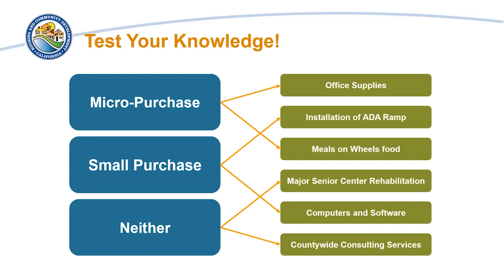Here are the answers. The purchase of office supplies can be procured using the micropurchase method so long as the supplies do not exceed $10,000 in the aggregate. The same is true for food for a Meals on Wheels program. The purchase of multiple computers and software will likely require the small purchase method since the purchase is likely to exceed the micropurchase threshold of $10,000 in the aggregate but not exceed the simplified acquisition threshold of $250,000 in the aggregate. Likewise, the selection of a contractor to install a new ADA ramp expected to cost less than $250,000 may be procured using the small purchase method.